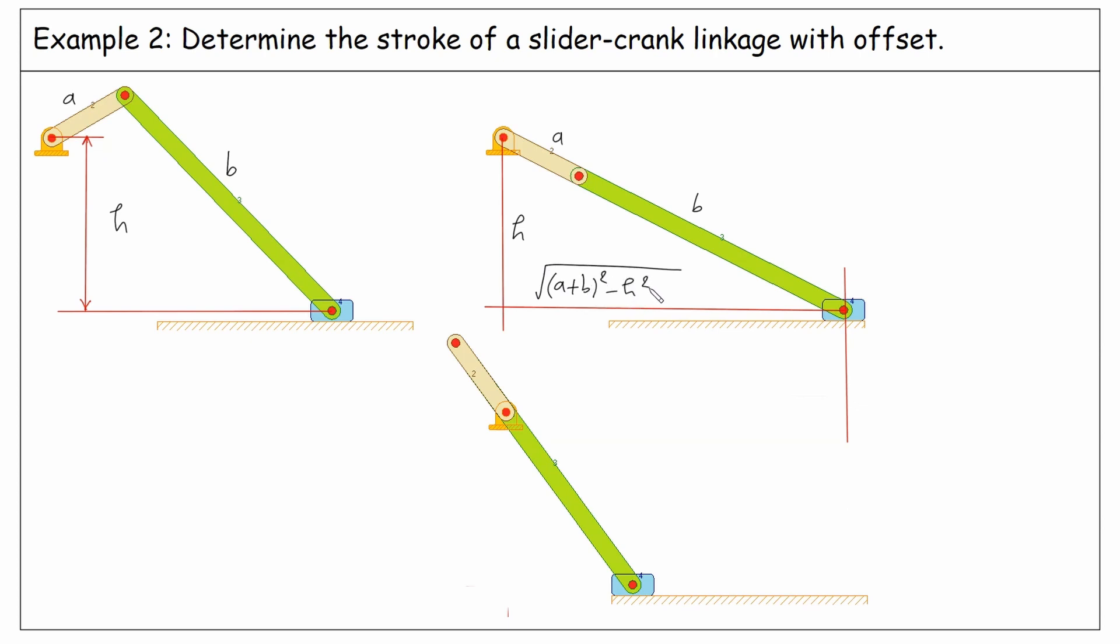Similarly, for the other extreme position, we have this part as B minus A. If we consider a triangle here, this side is B minus A. This side is H, and this side is the square root of B minus A squared minus H squared.